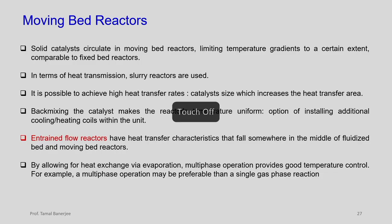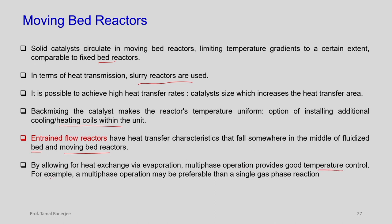Backmixing in slurry reactors makes reactor temperature uniform, and additional cooling and heating coils can be installed. Entrained flow reactors have heat transfer characteristics between fluidized bed and moving bed reactors. Multiphase operation provides good temperature control via evaporation — for example, a boiling liquid surrounding tubes in an exothermic reactor evaporates and removes heat. This is the best approach for heat exchange in such systems.